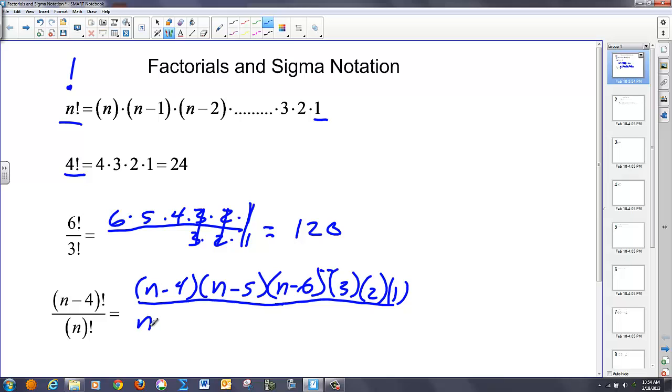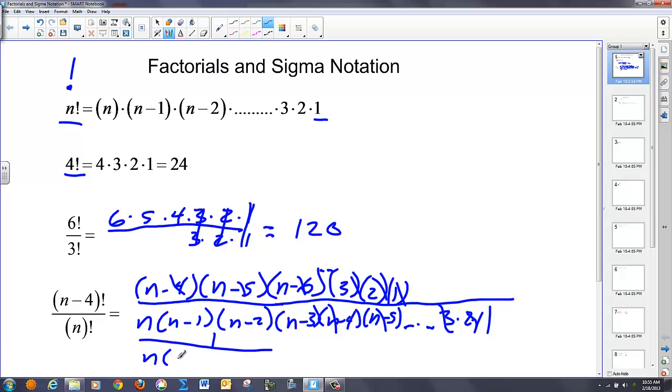So, n factorial is going to be n, n minus one, n minus two, n minus three, n minus four, and you'll see n minus five. We start creating overlap now. So basically, three, the two, the one, everything in between goes, and it keeps going until we get to n minus four, leaving me with the following. One on top, n, n minus one, n minus two, and n minus three in the denominator. And that's that simplification.